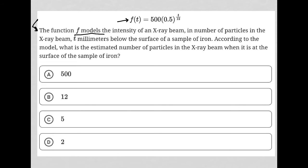Again, f models the intensity of an x-ray beam in number of particles. So the question is asking, what is the estimated number of particles? So we're basically asking, what is f when it is at the surface of the sample of iron?